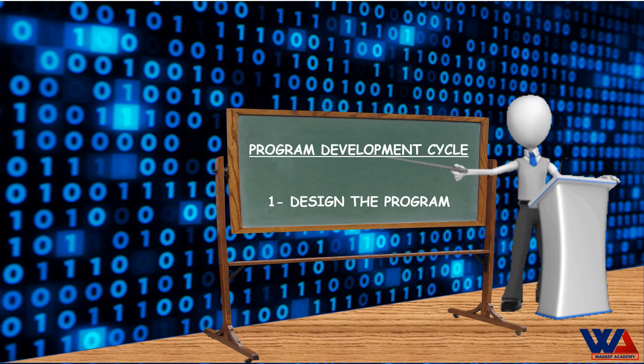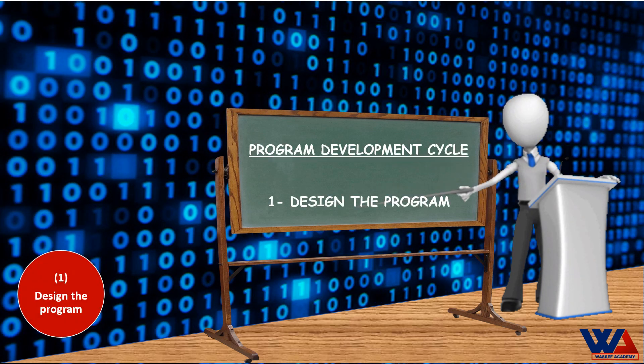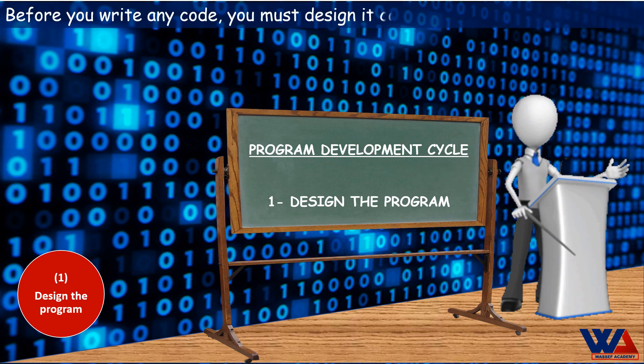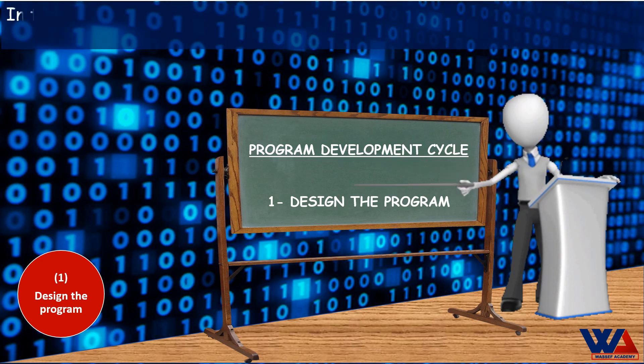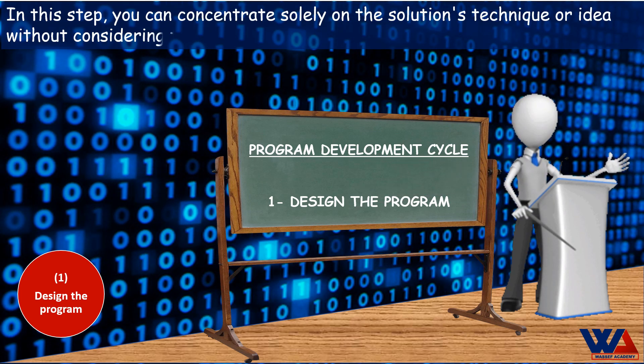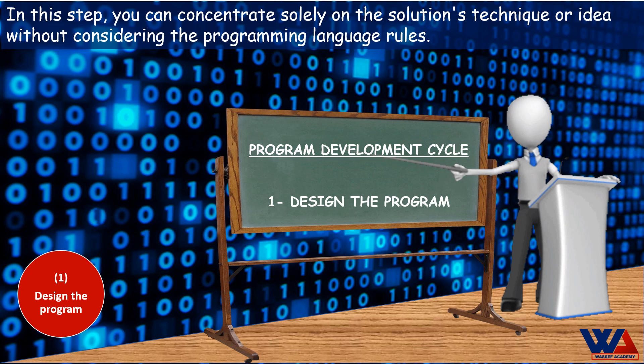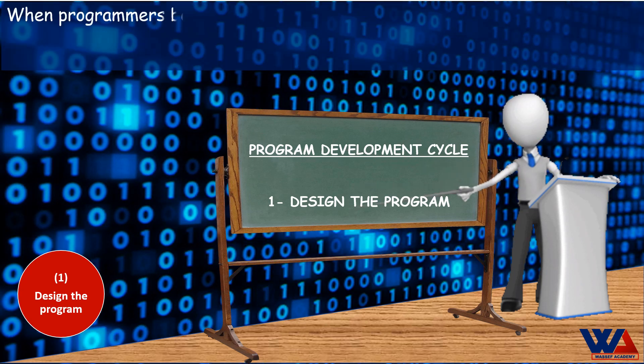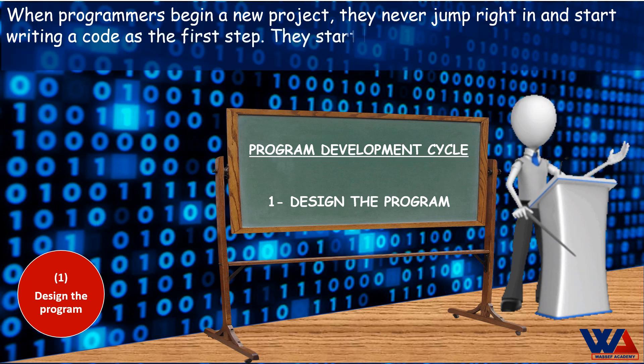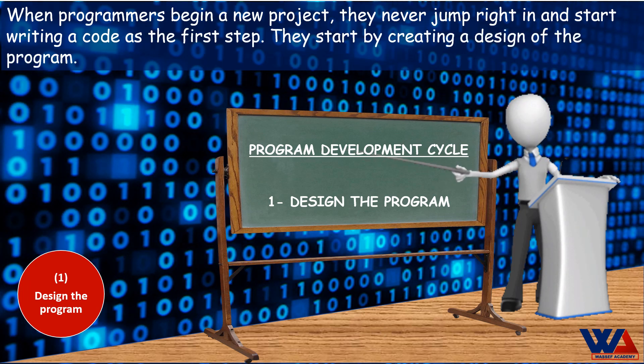Program development cycle - 1. Design the program. Before you write any code, you must design it carefully. In this step, you can concentrate solely on the solution's technique or idea without considering the programming language rules. When programmers begin a new project, they never jump right in and start writing code as the first step. They start by creating a design of the program.